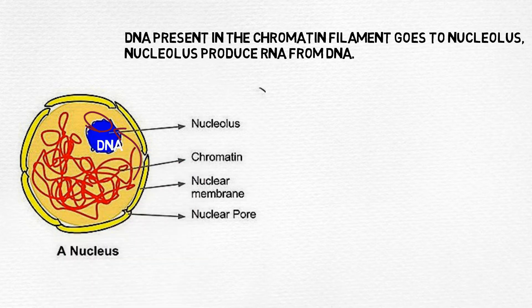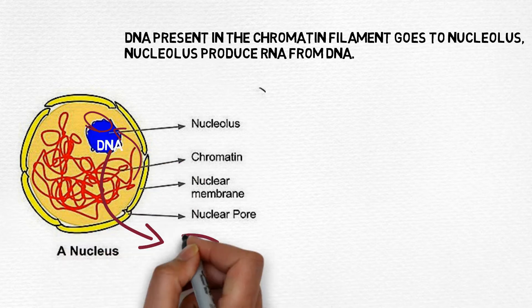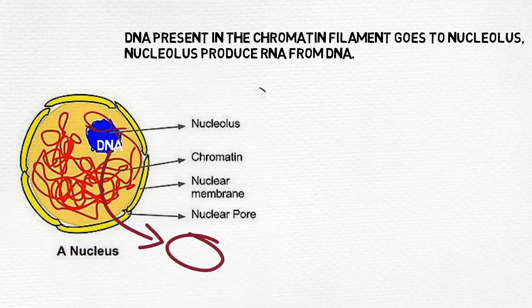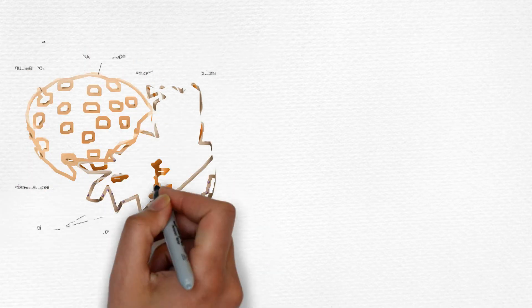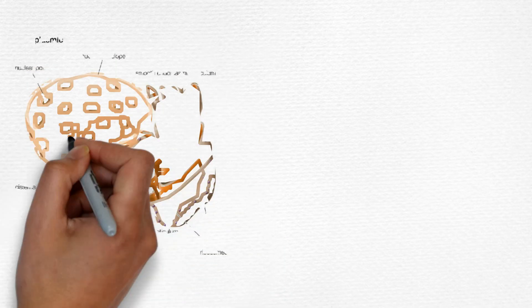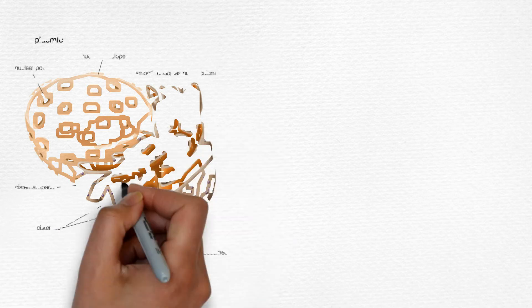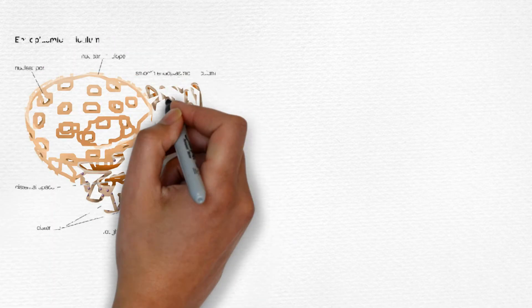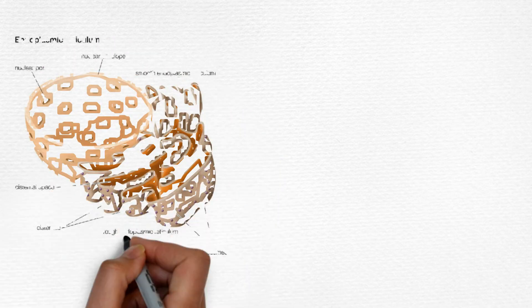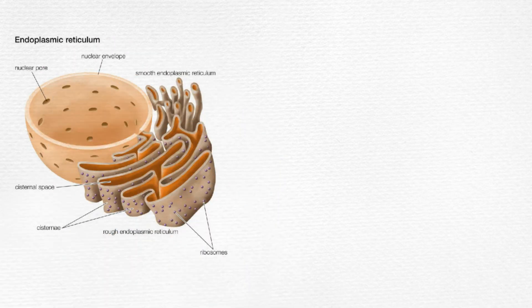The RNA is ejected through the nuclear pore, and then the ejected RNA comes to the endoplasmic reticulum that is attached to the nucleus of the cell.